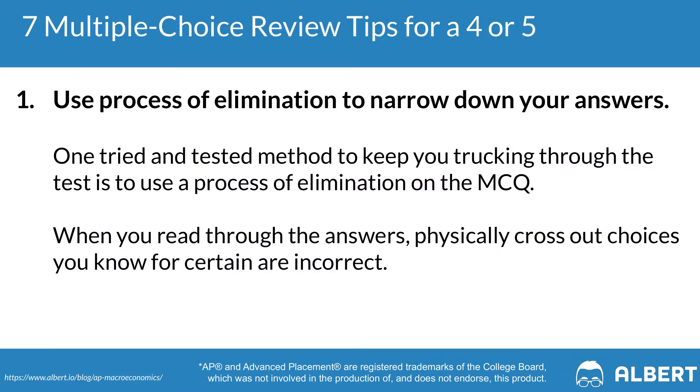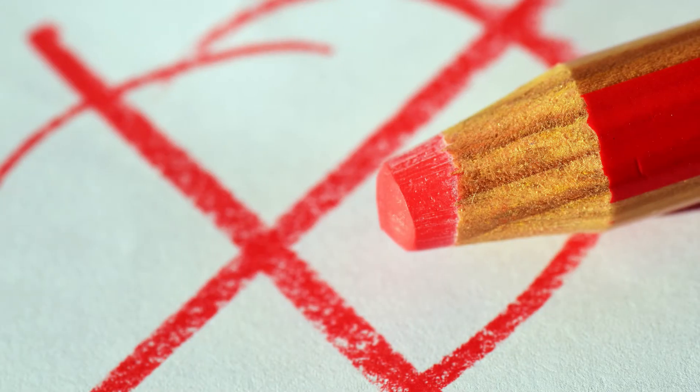Our first tip when it comes to tackling the AP macro MCQ section is to make sure that you are using the process of elimination. As you read through the answer choices, strike out the ones that make absolutely no sense. By simply eliminating one or two answer choices, you can significantly increase your odds of getting that question correct. We recommend that you physically take your writing utensil and strike out clearly incorrect answer choices as you work through your exam. By practicing this active test-taking approach, you'll be more engaged with the content.